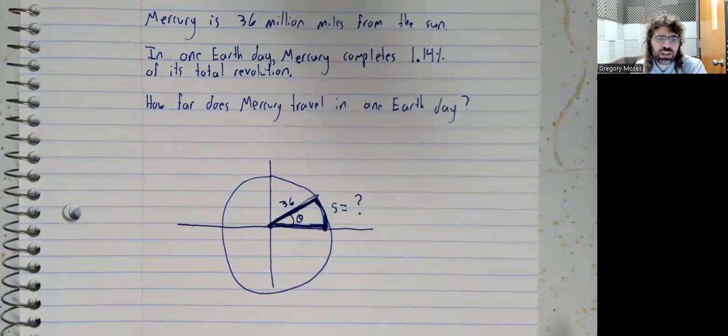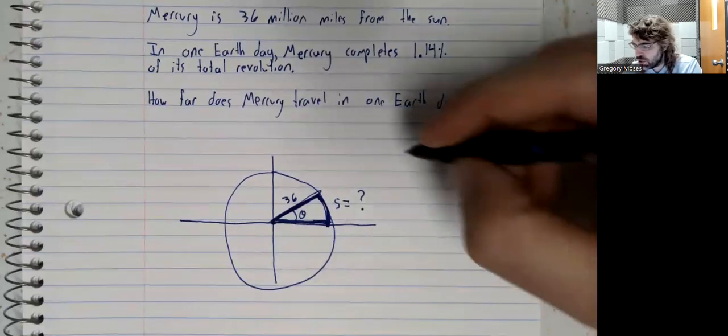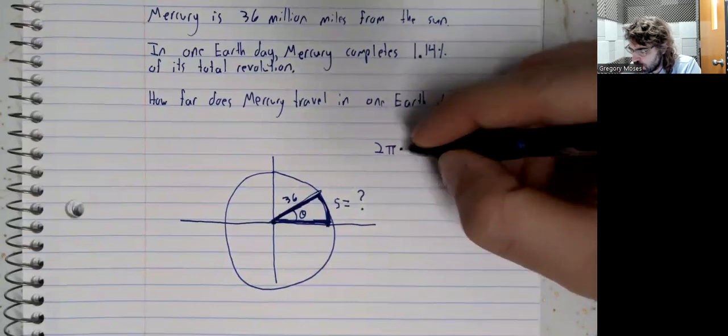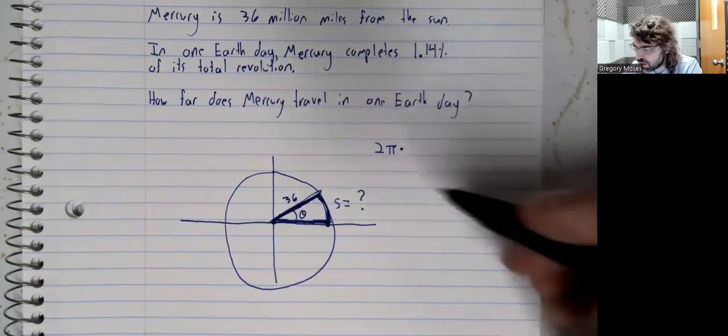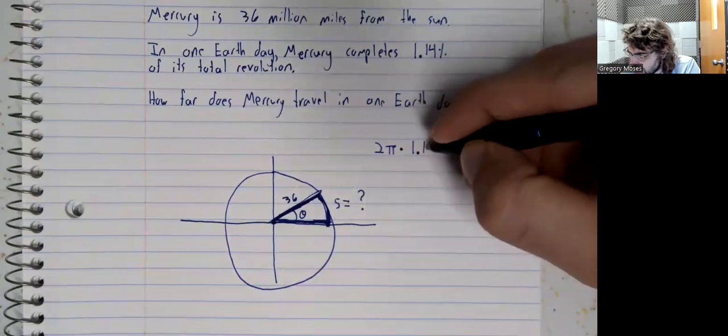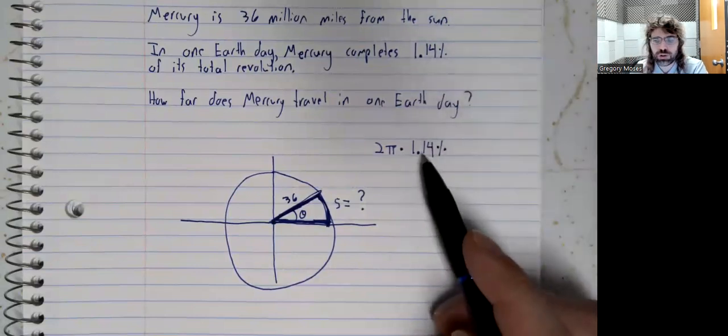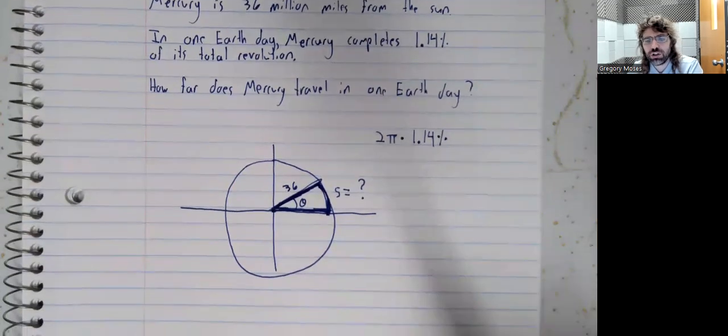Well, we're not given theta, but we can work it out. We know that one full rotation around the sun would be 2π radians. We travel 1.14% of that. That is to say, we make 1.14% of a total 2π radian revolution.